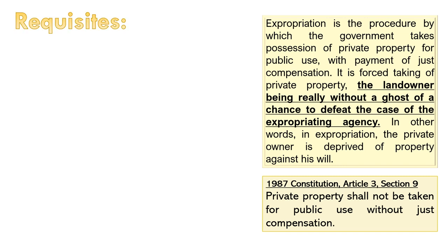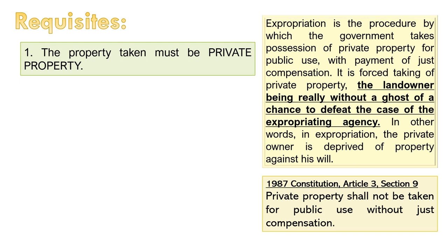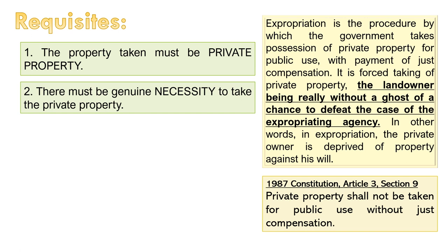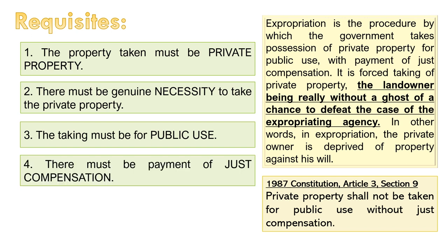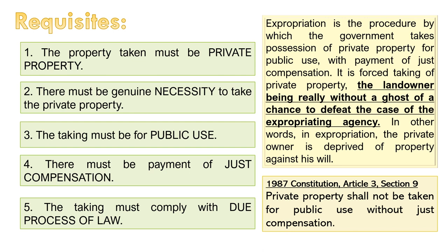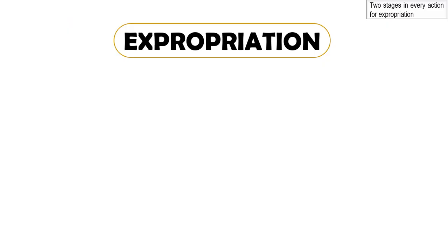The requisites for the government to exercise its power of eminent domain are: (1) the property taken must be private property; (2) there must be a genuine necessity to take that private property; (3) the taking must be for public use; (4) there must be payment of just compensation; and (5) it must comply with due process of law. In summary: private property, necessity, public use, just compensation, and due process of law.